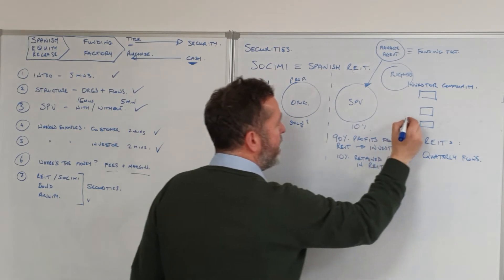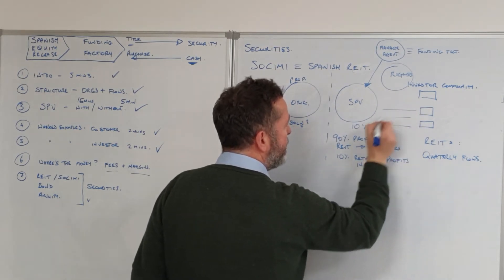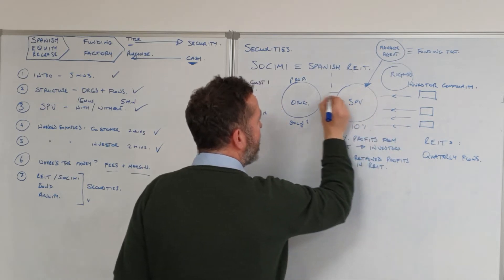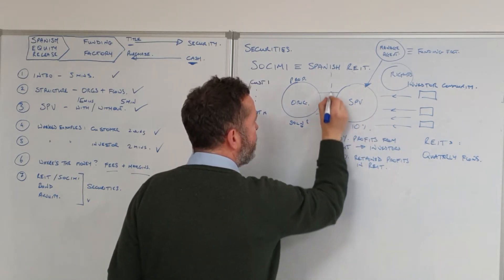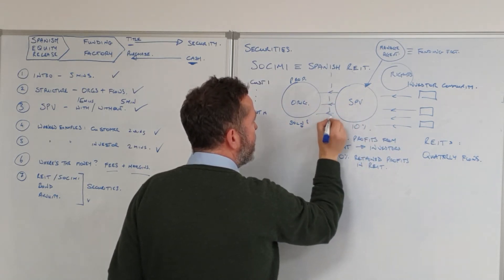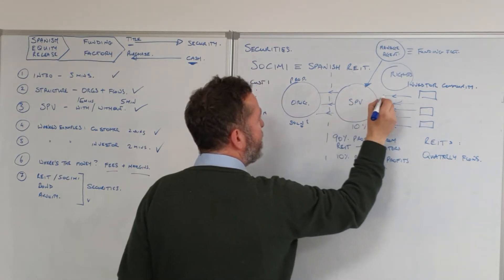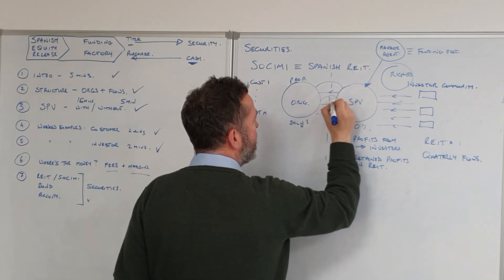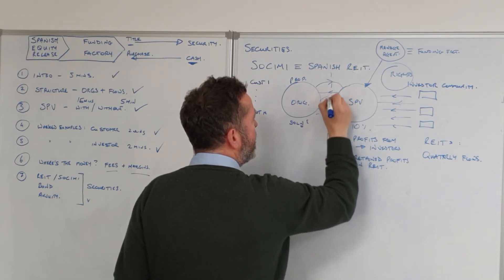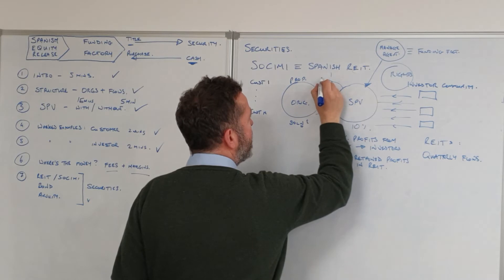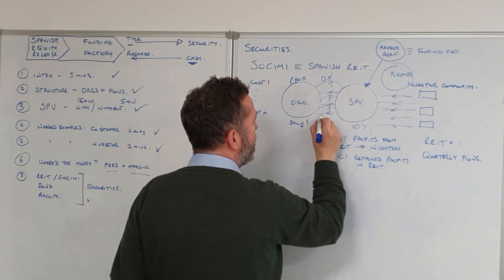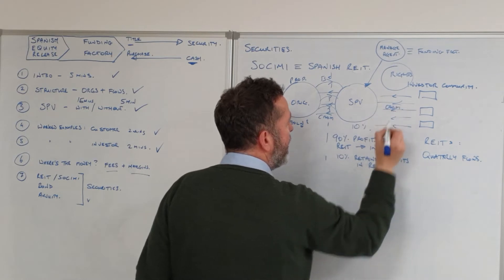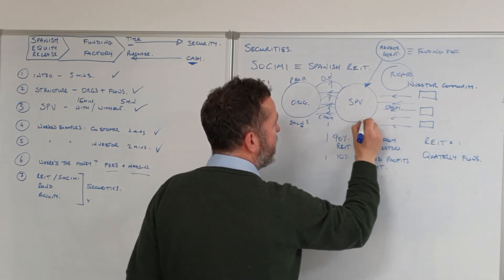Cash is coming in one way and flowing out the other, with the beneficial ownership rights moving in the opposite direction, and the security going out here.